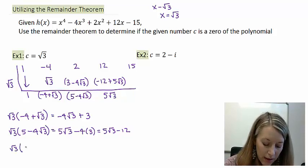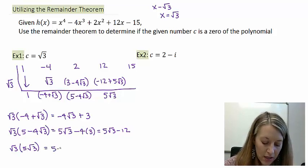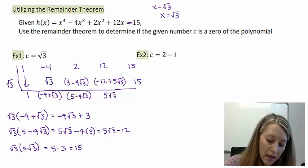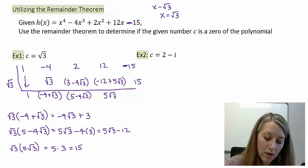Now I need to multiply. So √3 times 5√3 gives me 5 times 3, or positive 15. So I pull that up here, and it looks like I forgot my negative, so this should have been a negative here. So -15 plus 15 gives me a remainder of 0.